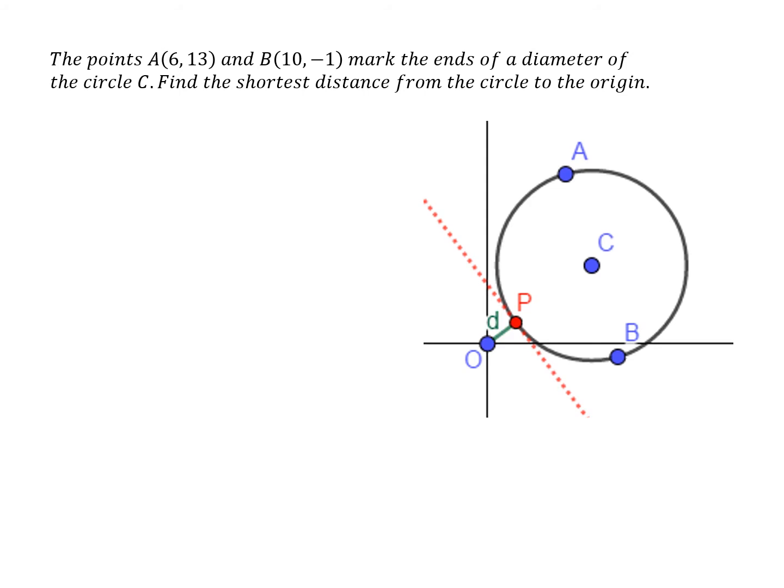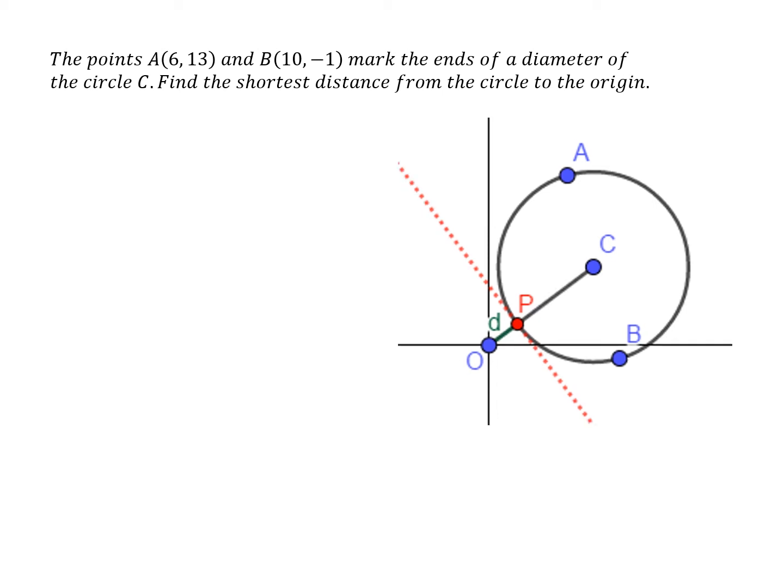Well, the point P is on the line OC, on this line here. Now because OC, the length of d goes through the point P, we can calculate the length of d by saying that the length of d is the length of OC minus the length of PC